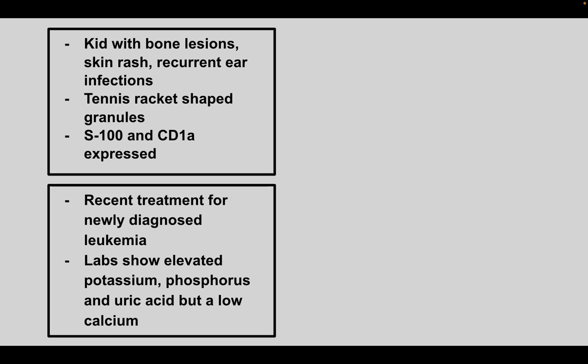Next, you have a child who has bone lesions, a skin rash, and recurrent ear infections. They have tennis racket-shaped granules and the cells are positive for S100 and CD1A. This is Langerhans cell histiocytosis.